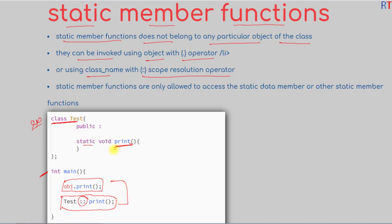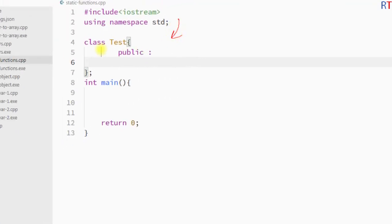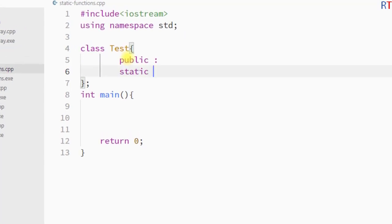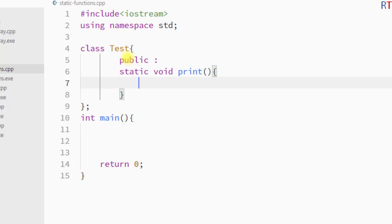In both cases we can access the static function of that class. Now, static member functions are only allowed to access static data members or static member functions — they cannot access instance data members or instance member functions. In this example, inside class 'test' we create one static member function: static void print, which prints 'static function' to the console.